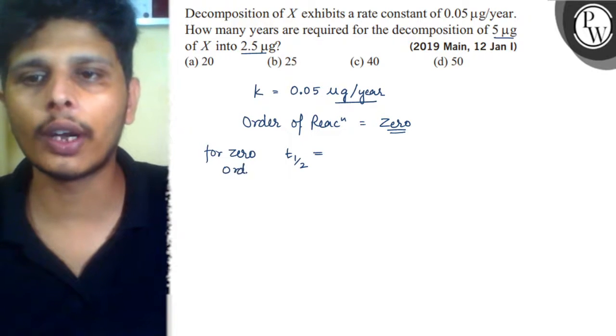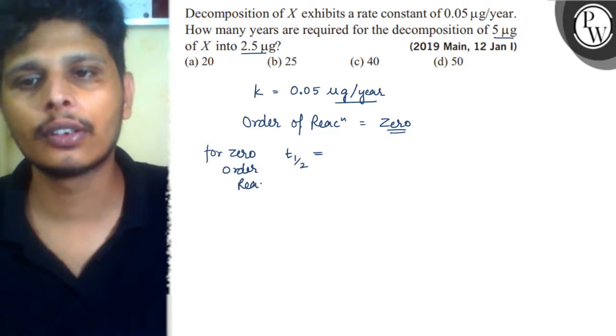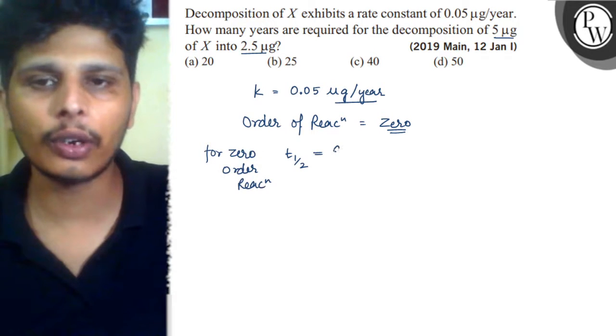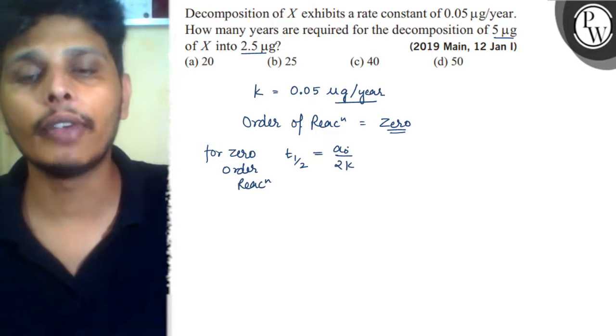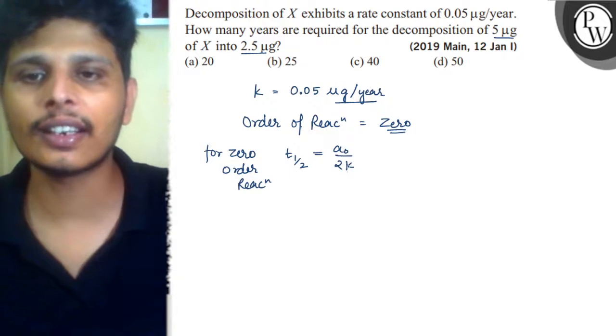Zero order reaction t half is equal to a naught upon 2k, where a naught is the initial concentration.